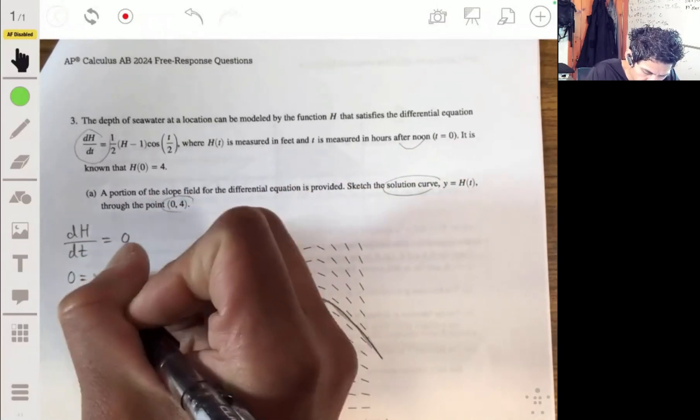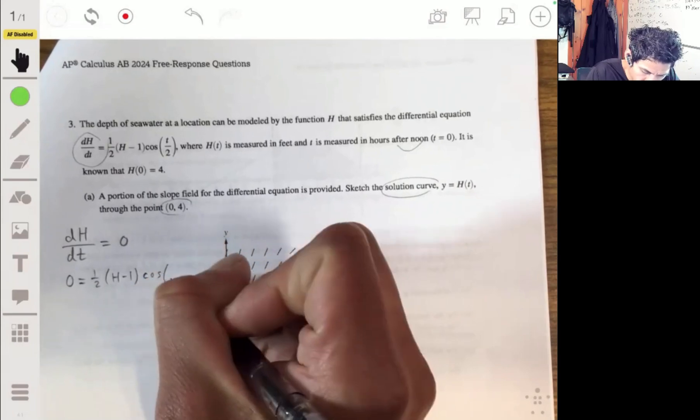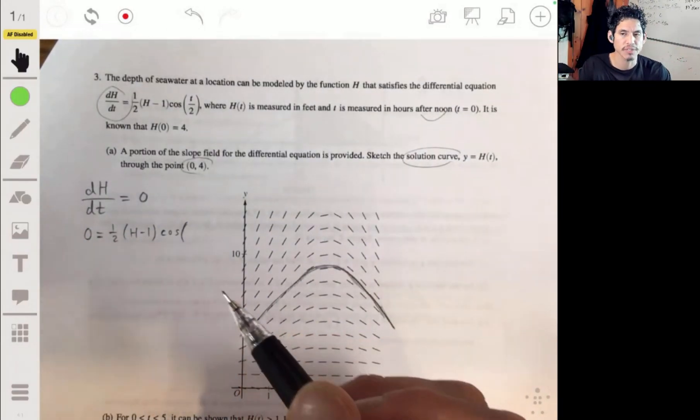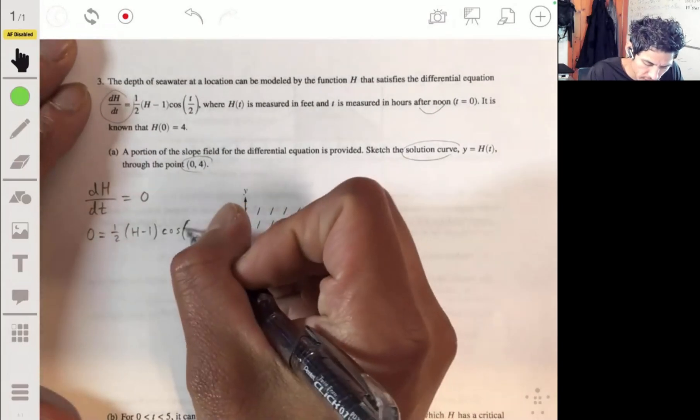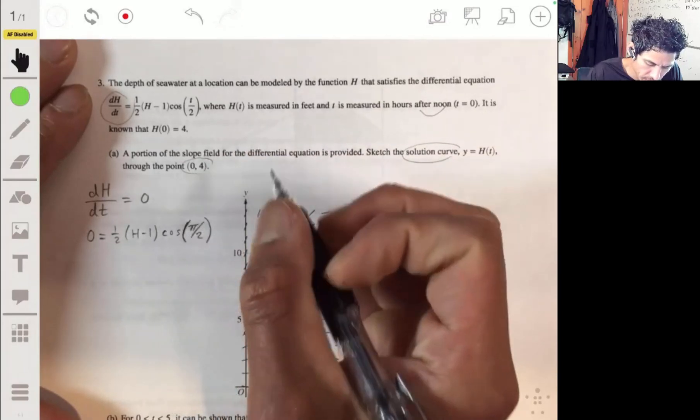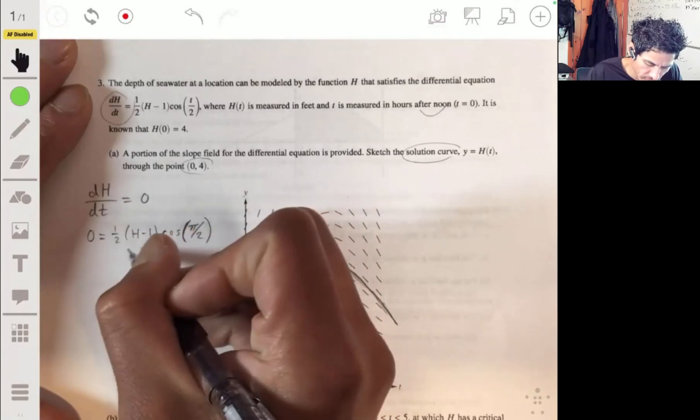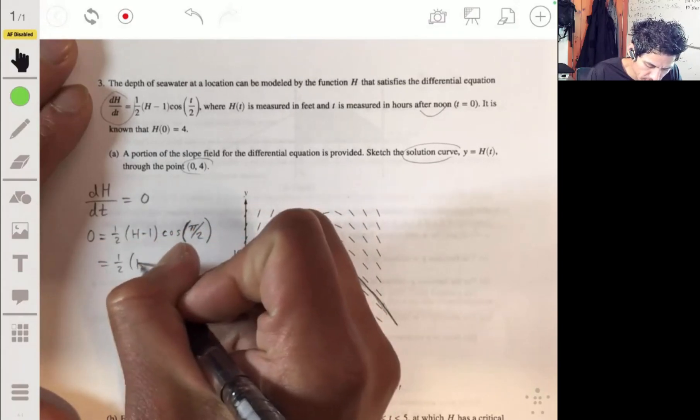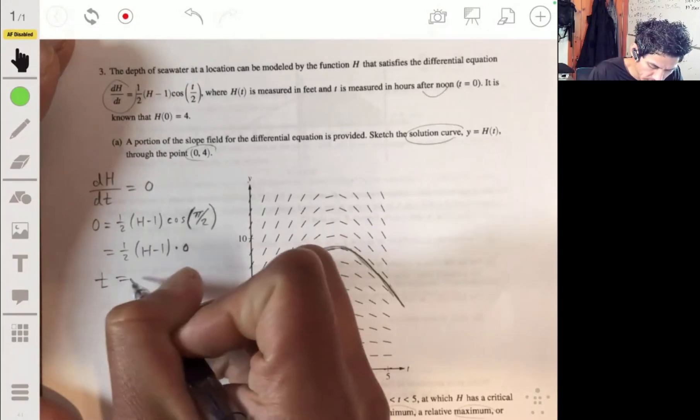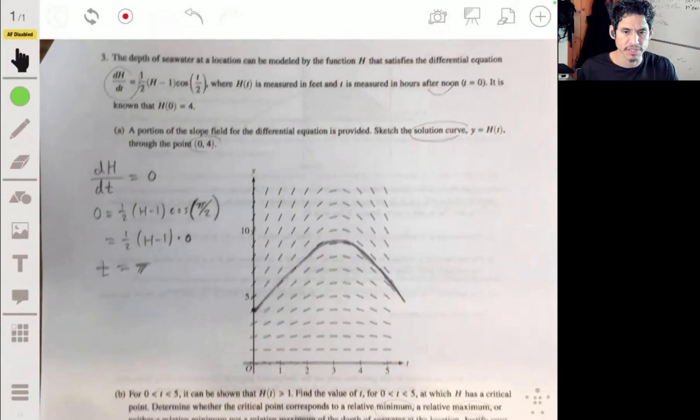So we have 0 is equal to 1 half times h minus 1 times cosine of t over 2. So what do we remember about our unit circle? When is the cosine equal to 0? Yeah, that's right. It's at pi over 2 at the top. So then t will be pi. Because then what you get here is doesn't matter what this guy is because we have 1 half times h minus 1 times 0. So our value for t will be pi. And pi is about 3.14 so we know that's between 0 and 5. So that's going to work.